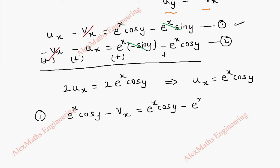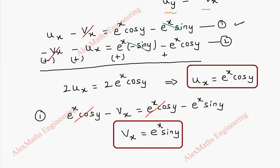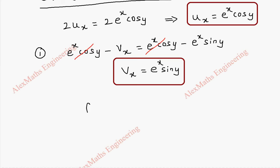That is: e^x·cos y minus vx equals e^x·cos y minus e^x·sin y. The e^x·cos y cancels on both sides, and by changing the sign we get vx equals e^x·sin y. So we have found both ux and vx. Now we write f of z: f(z) = u + i·v, so f'(z) = ux + i·vx.